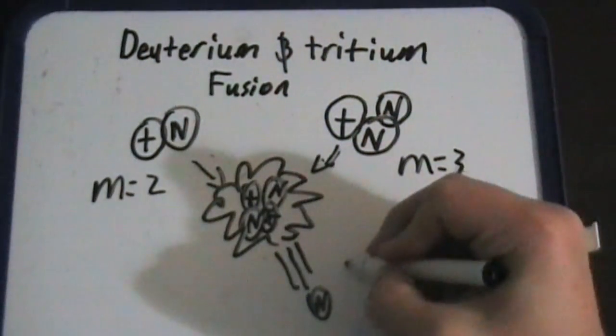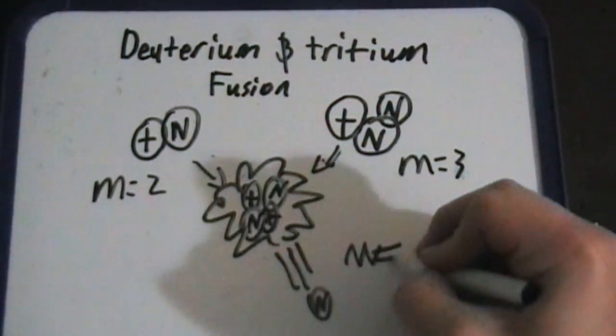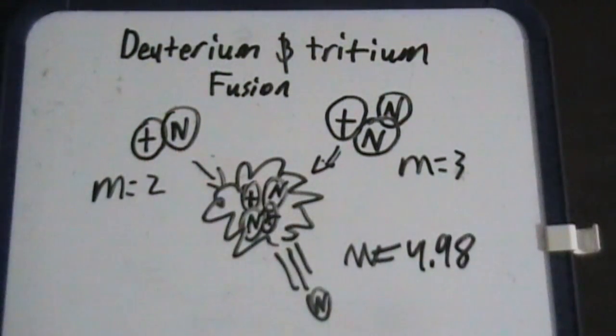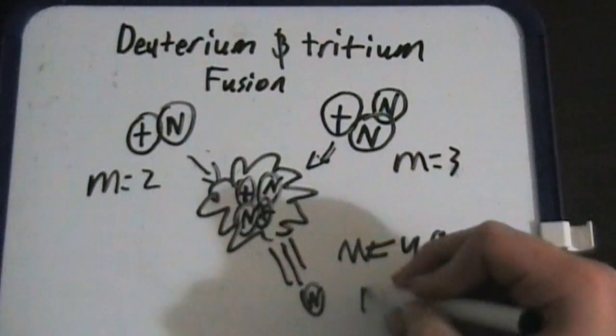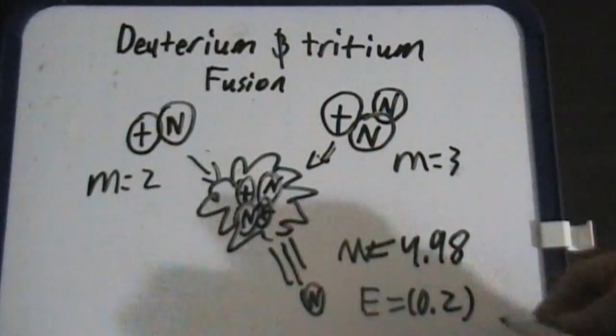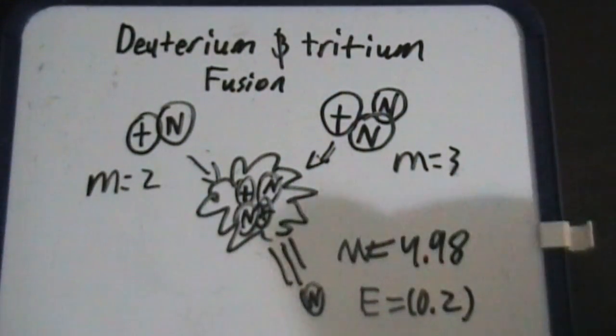The mass afterwards equals 4.98. The energy released from it is E equals 0.2 C squared.